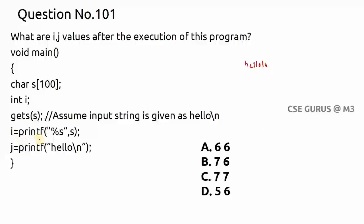Now, i equals printf("%s", s) and j equals printf("hello\n"). What is the i value and what is the j value? When you assign a printf statement to a variable, the value assigned is the count of symbols printed.